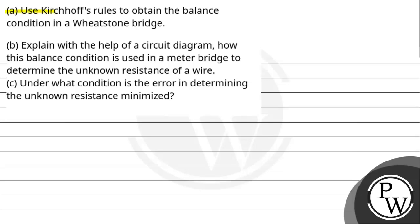Let's read this question. Part A: using Kirchhoff's rule to obtain the balance condition in the Wheatstone bridge. Part B: explain with the help of a circuit diagram how this balance condition is used in a meter bridge to determine the unknown resistance of a wire. Part C: under what condition is the error in determining the unknown resistance minimized.